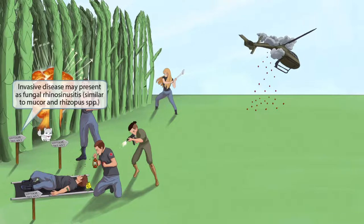We've added some signs to the image that say 'Vietnam this way.' The signs are a symbol for sinusitis, and we've included them here to help you remember that invasive disease may present as fungal rhinosinusitis, which is similar to an infection caused by Mucor and Rhizopus species.